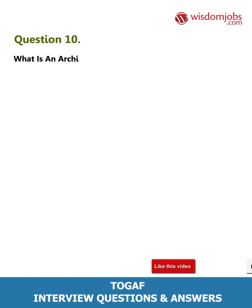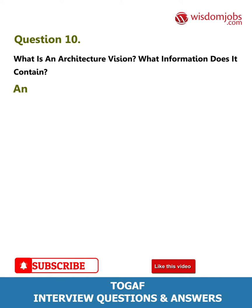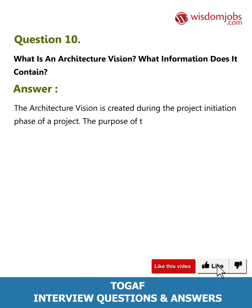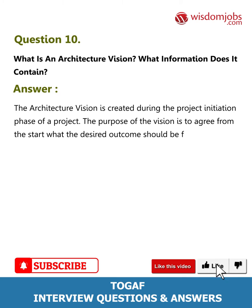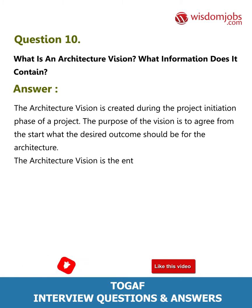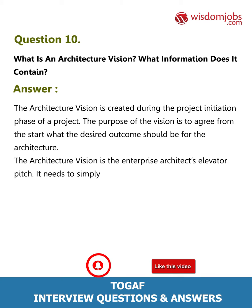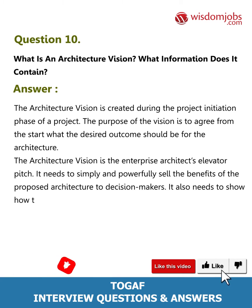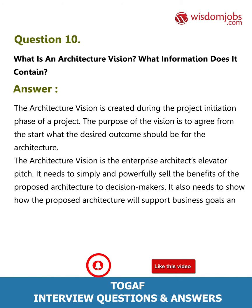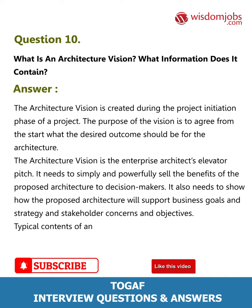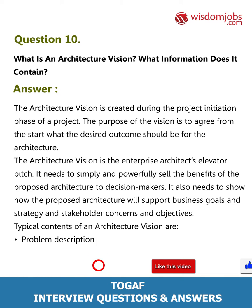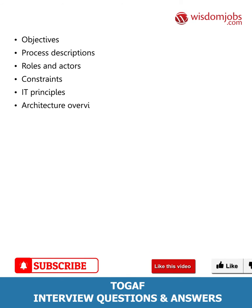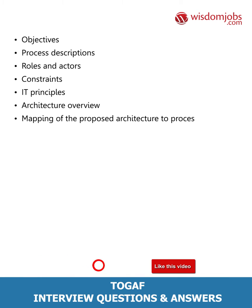Question 10: What is an architecture vision and what information does it contain? The architecture vision is created during the project initiation phase. The purpose is to agree from the start what the desired outcome should be for the architecture. The architecture vision is the enterprise architect's elevator pitch — it needs to simply and powerfully sell the benefits of the proposed architecture to decision makers. It also needs to show how the proposed architecture will support business goals, strategy, and stakeholder concerns. Typical contents include: problem description, objectives, process descriptions, roles and actors, constraints, IT principles, architecture overview, and mapping of the proposed architecture to processes and requirements.